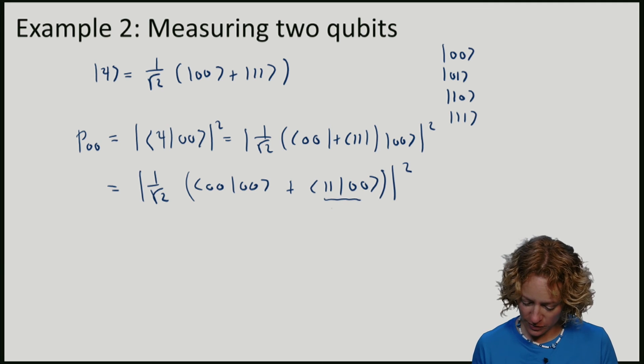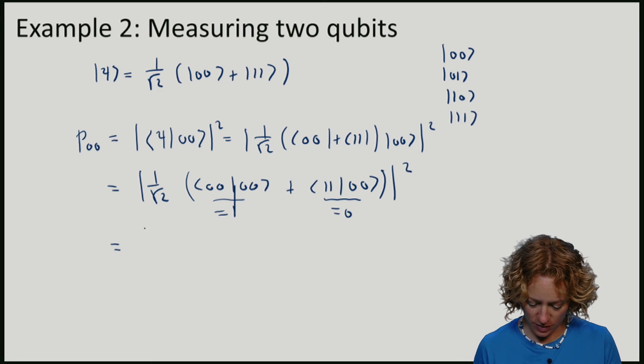So again, these are orthogonal, so this is zero. Vectors have length one, so this gives me one. So this is one over square root two, squared, which is a half.